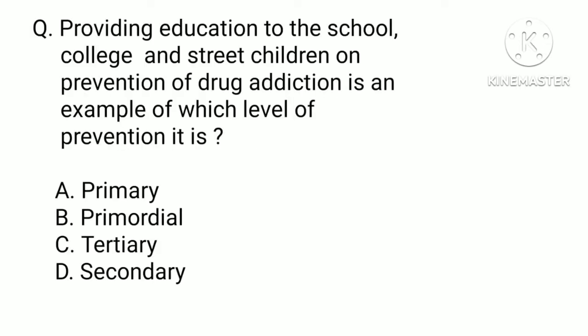Providing education to school, college, and street children on prevention of drug addiction is an example of which level of prevention: a) primary, b) primordial, c) tertiary, or d) secondary? The correct answer is b) primordial.